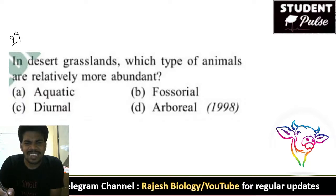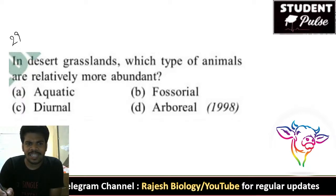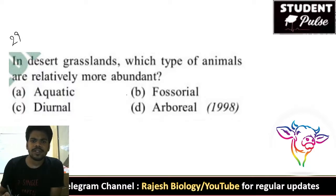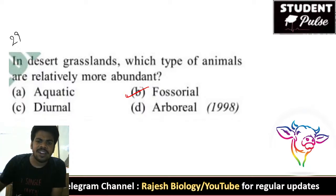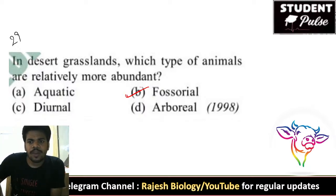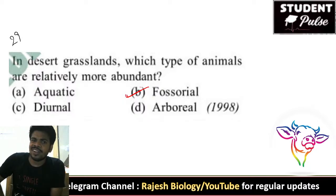Twenty-ninth question: in desert grasslands, which type of animals are relatively more abundant? Fossorial animals — animals which dig in the soil and stay underground — are more abundant in desert grasslands.